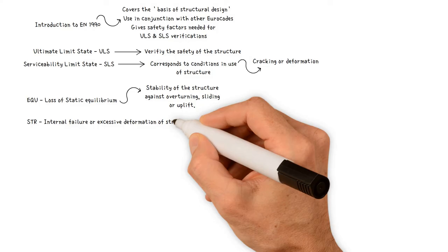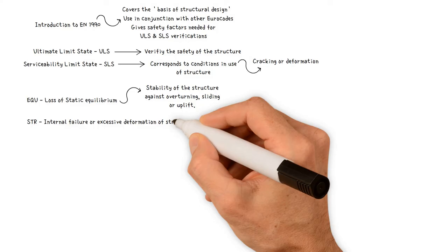The second check is structural internal failure or excessive deformation of the structure or structural members, including footings, piles, basement walls, etc., where the strength of construction materials governs. The third is geotechnical failure or excessive deformation of the ground where the strengths of soil or rock are significant in providing resistance. When considering a limit state of rupture or excessive deformation — STR for the superstructure and GEO for the structural design of foundations — the verification must ensure that the design value of the effect of actions, such as moment, is equal to or less than the design value of the corresponding resistance.